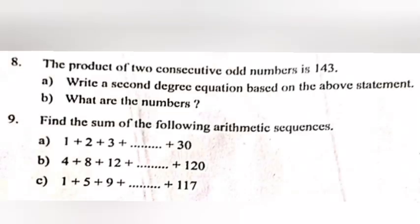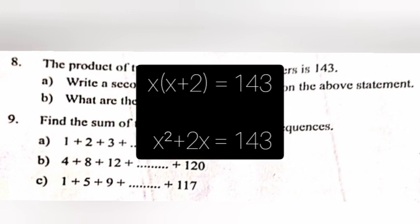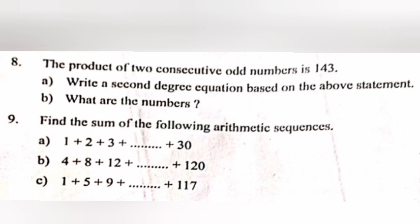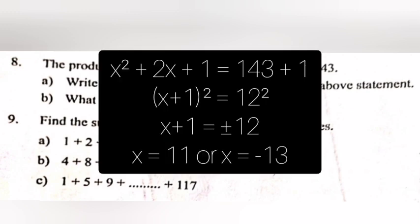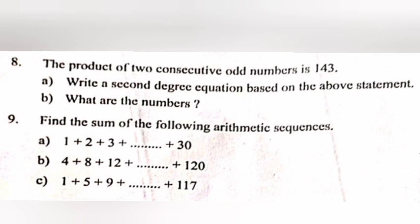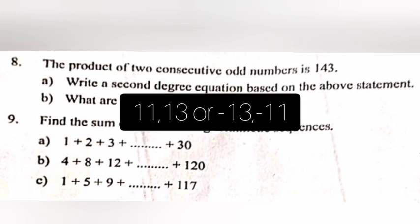Question 8: The product of two consecutive odd numbers is 143. Part A: Write a second-degree equation based on the above statement. Part B: What are the numbers? Answer A: X(X plus 2) equals 143; second-degree equation: X² plus 2X equals 143. B: X² plus 2X plus 1 equals 144, so (X plus 1)² equals 12². Thus X plus 1 equals plus or minus 12, giving X equals 11 or X equals minus 13. The numbers are 11, 13 or minus 13, minus 11.